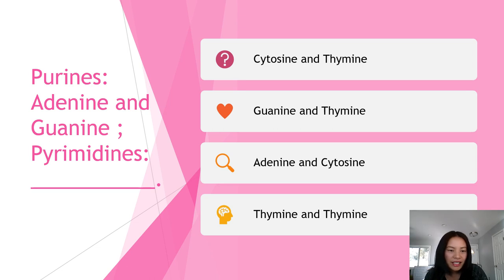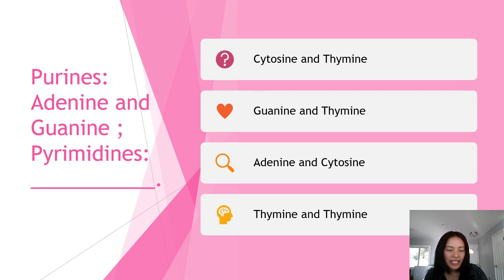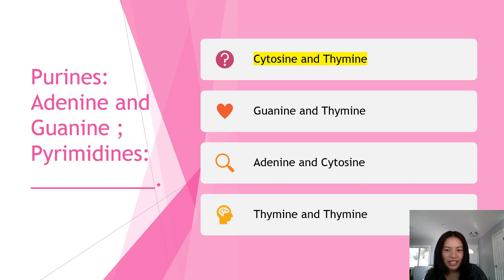Number four: purines are to adenine and guanine, while pyrimidines are to what? Is it A) cytosine and thymine, B) guanine and thymine, C) adenine and cytosine, or D) thymine and thymine? The answer is A, cytosine and thymine. Just remember: for purines it's adenine and guanine (AG), and for pyrimidines it's cytosine and thymine (CT).